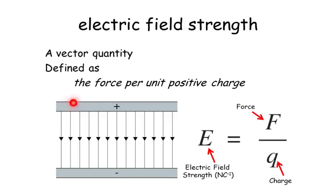If you've got a uniform field - imagine if I had two plates here, a positively charged plate and a negatively charged plate - I'd have an electric field running from the positive towards the negative.